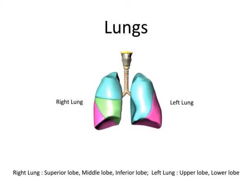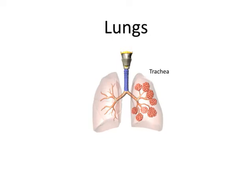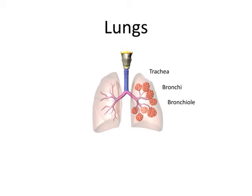Normally as we breathe in, air moves freely through a large pipe called the trachea, which is also called the windpipe, then through large tubes called bronchi, through smaller tubes called bronchioles, and finally into tiny round air sacs called alveoli.